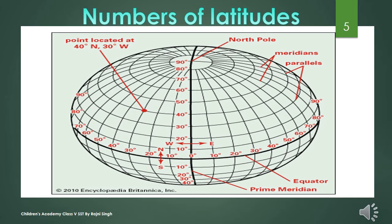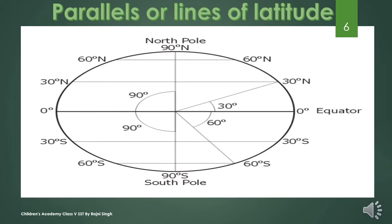All parallels are at an equal distance from each other — saare parallels aapas mein baraabar doori par hain. Like parallel lines, these parallels or lines of latitude also do not meet each other. These parallels are marked in degrees.